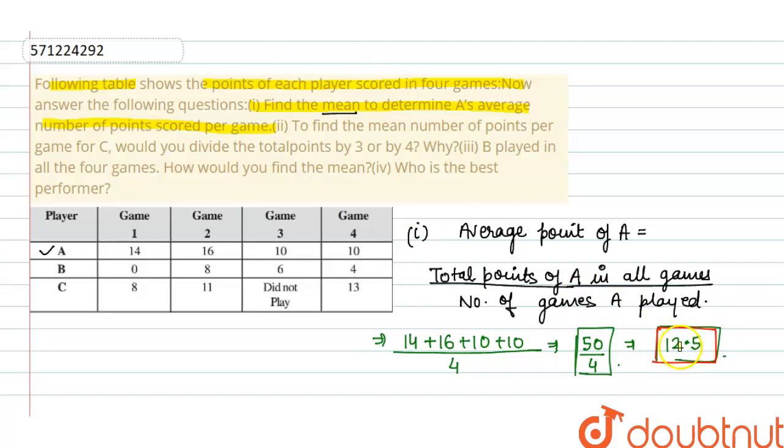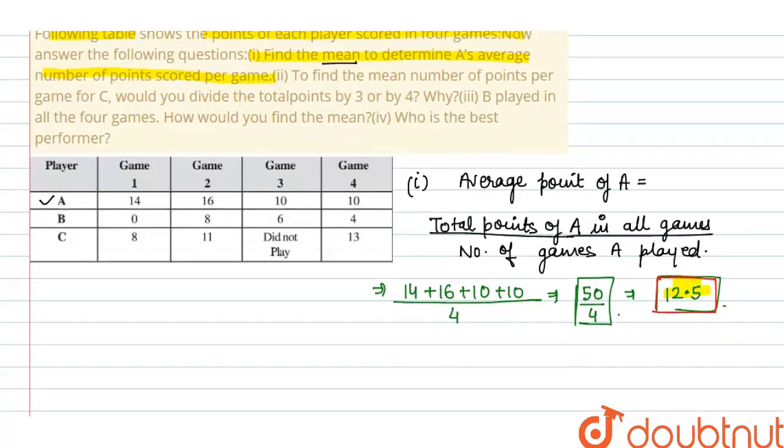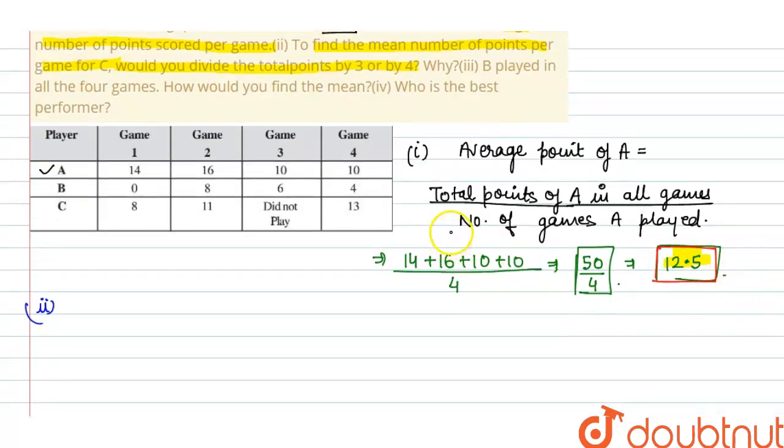Now come to the second part. The first part has completed. In the second part, it is asking to find the mean number of points per game for C. Would you divide the total points by 3 or 4? According to the second part, we have to find for C. Mean points we have to find of C.